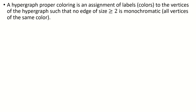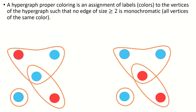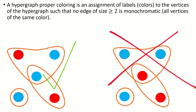Today we're going to take a look at hypergraph proper colorings. A proper coloring of a hypergraph is an assignment of colors to the vertices of the hypergraph, such that no edge of the hypergraph that is of size 2 or greater has all vertices of the same color.